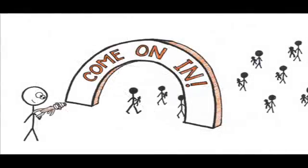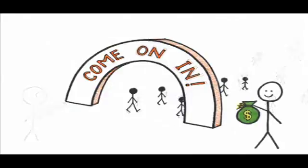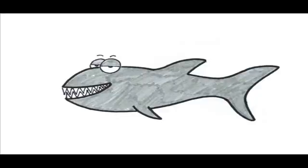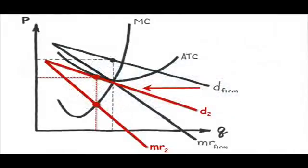If a monopolistically competitive firm is making a profit in the short run, then other firms will see that profit and they will enter the industry. This will draw away some customers from the existing firm, lowering demand, and eventually, the existing firm will just break even. Remember, if profits still exist, new firms continue to enter until there are no more profits to be had.